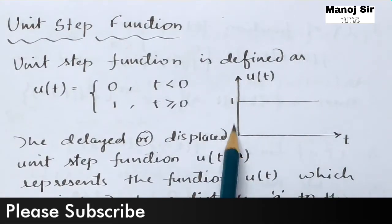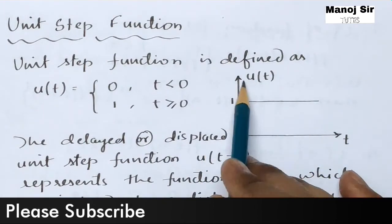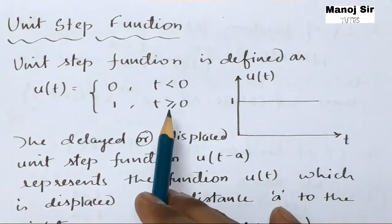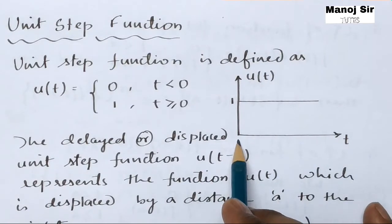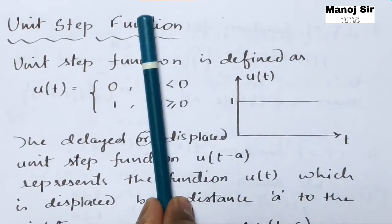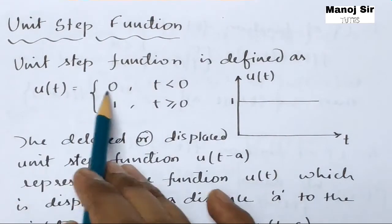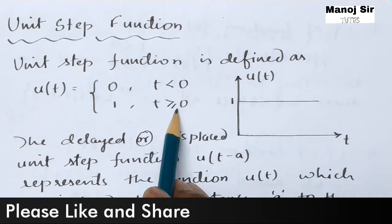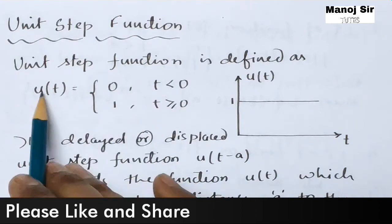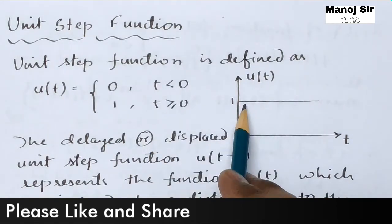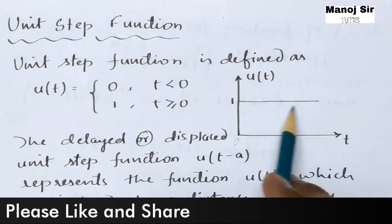Here I have plotted one graph. On the x-axis you have t and on the y-axis you have u(t), which is the unit step function. For t less than 0, the value of u(t) is 0. From t equals 0 onwards, that is t greater than or equal to 0, the function u(t) is 1. From 0 to the right-hand side, u(t) is 1 throughout.